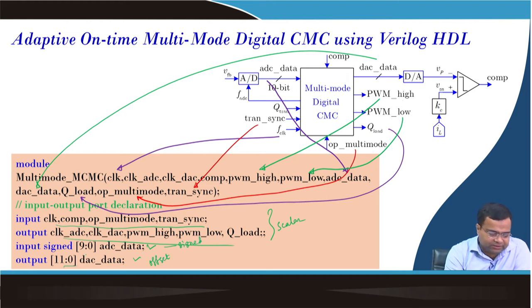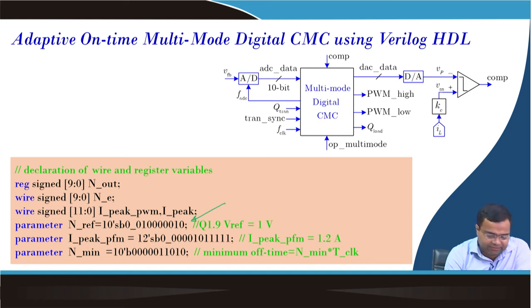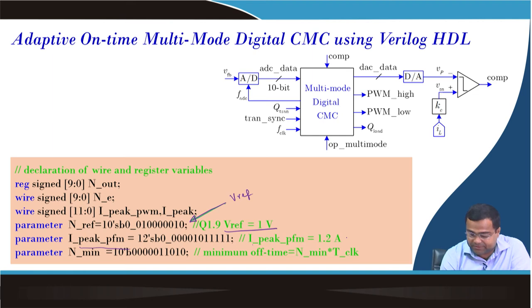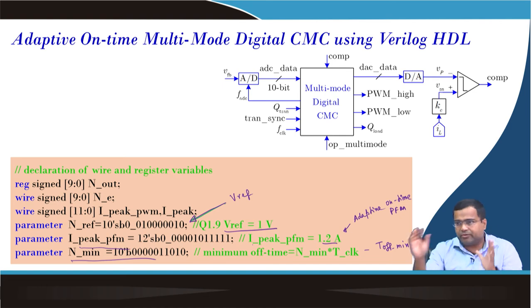The high-side gate signal and low-side gate signal are defined here. ADC data and TransSync are discussed. We define which are the inputs and what are the outputs — these are scalar, this is a vector input, vector output, this is signed, this is offset binary, this is 12-bit, this is 10-bit. Now we are defining I_REF, which is linked with V_REF reference voltage — V_REF equal to 1. Parameter peak current limit is set for PFM equal to 1. This is for the adaptive on-time PFM, and this is the minimum corresponding to T_on minimum, because any on-time modulator should have a minimum on-time.